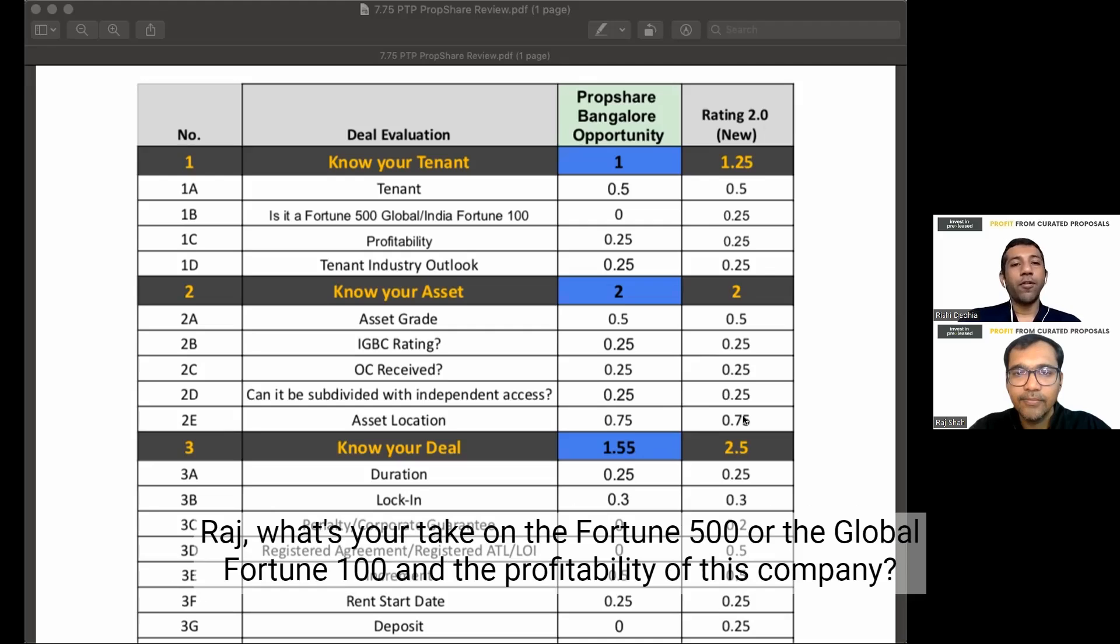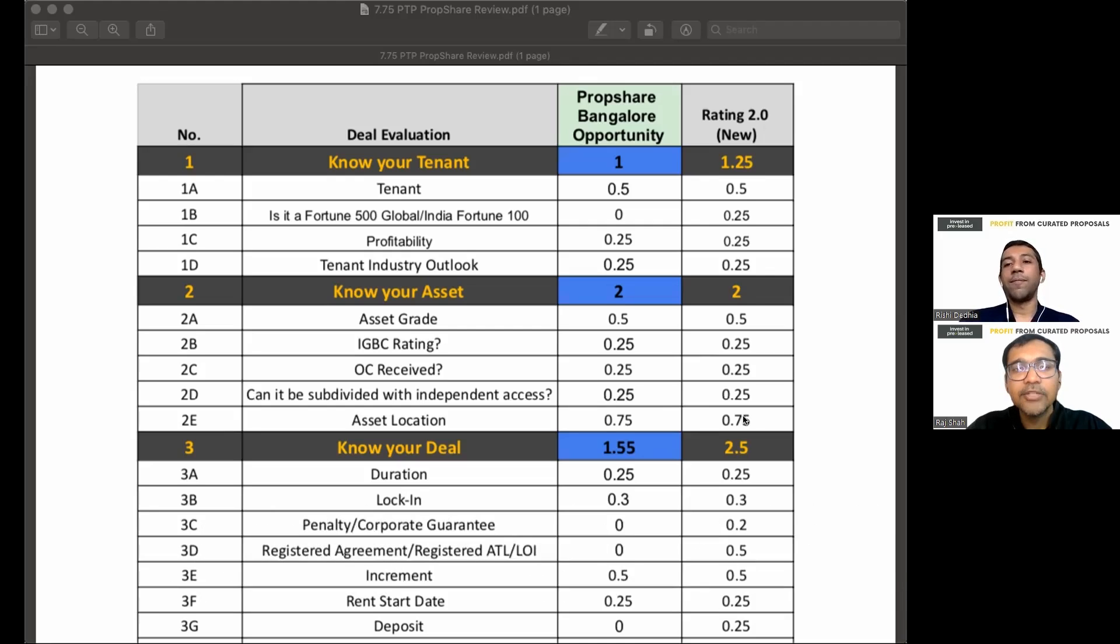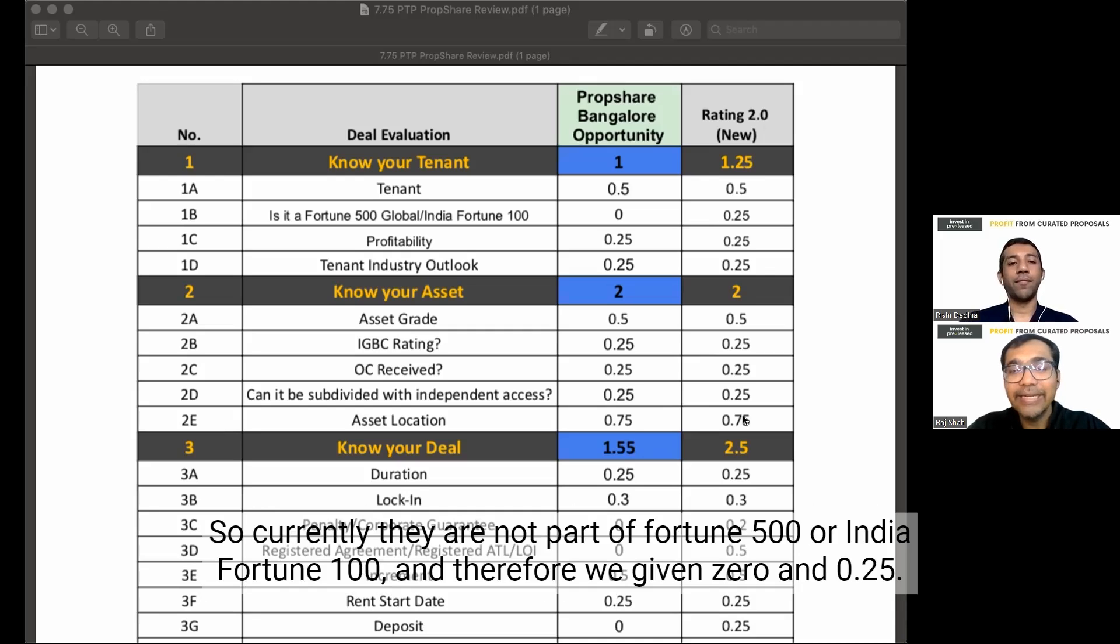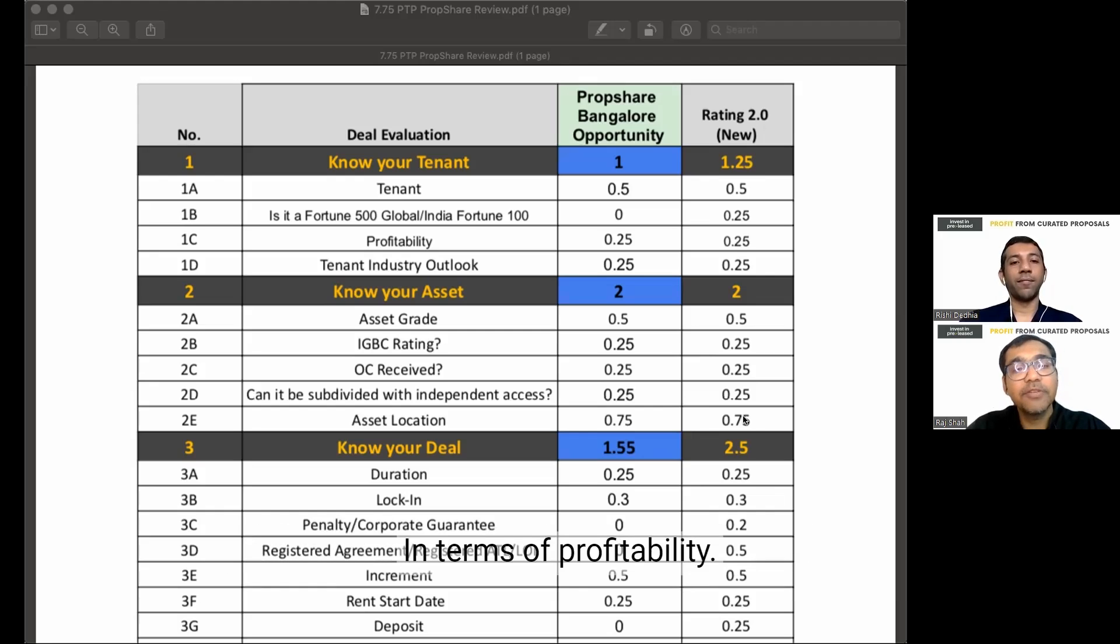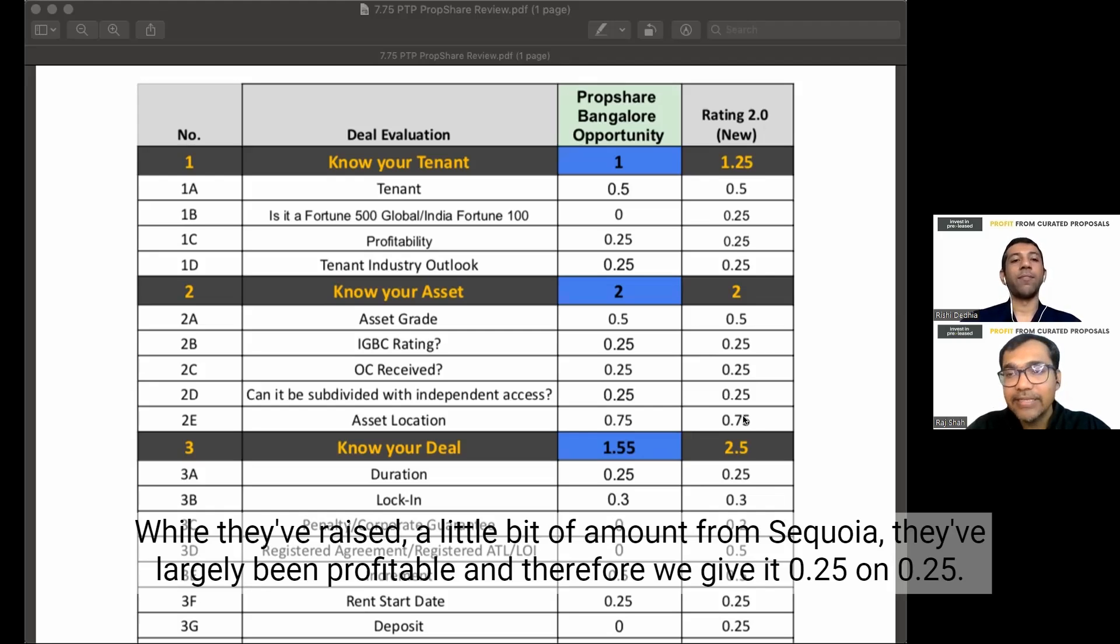And that's the reason I think looking at all parameters right now, we would want to give tenant as 0.5 on 0.5 with the kind of background that they're having right now. What's your take on the Fortune 500 or the global Fortune 100 and the profitability of this company? Currently, they are not part of Fortune 500 or India Fortune 100, and therefore we give it 0 on 0.25. In terms of profitability, yes, while they've raised a little bit of amount from Sequoia, they've largely been profitable. And therefore, we give it 0.25 on 0.25.